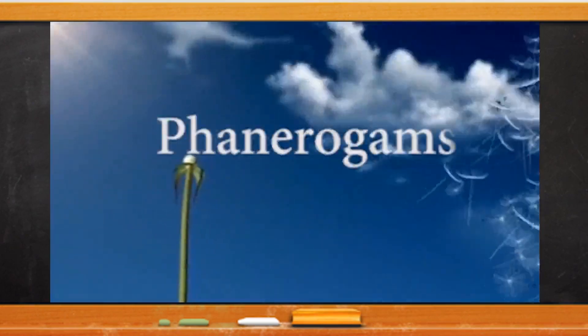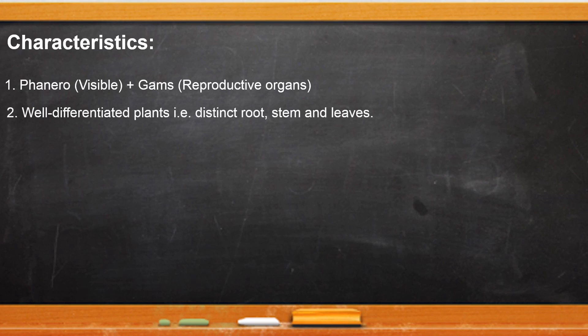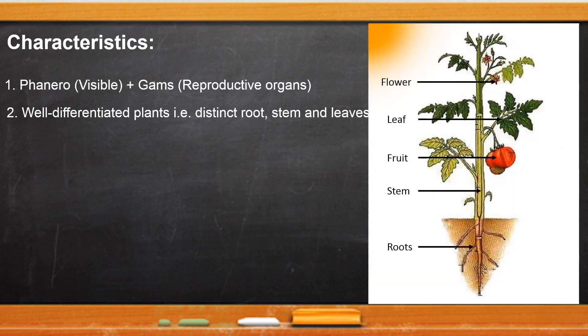Let's begin with the characteristics of Phanerogames. The Phanerogames word is derived from two Greek words: Phanero means visible and Gams means reproductive organs. These plants have well-differentiated body structure like root, stem, leaves, etc.